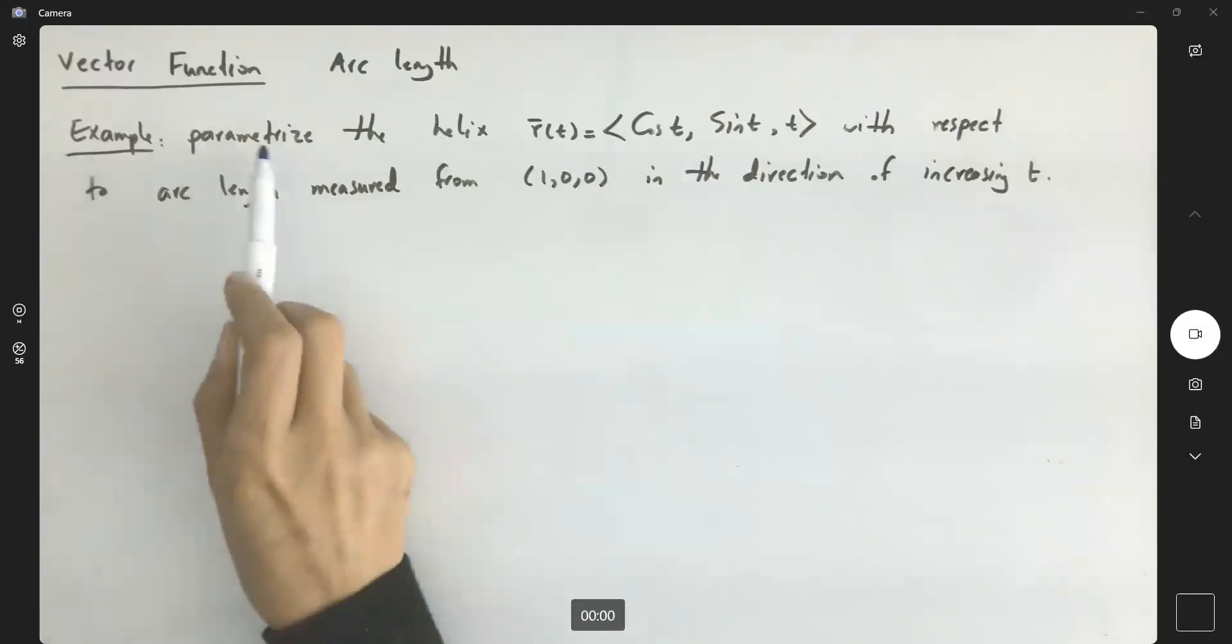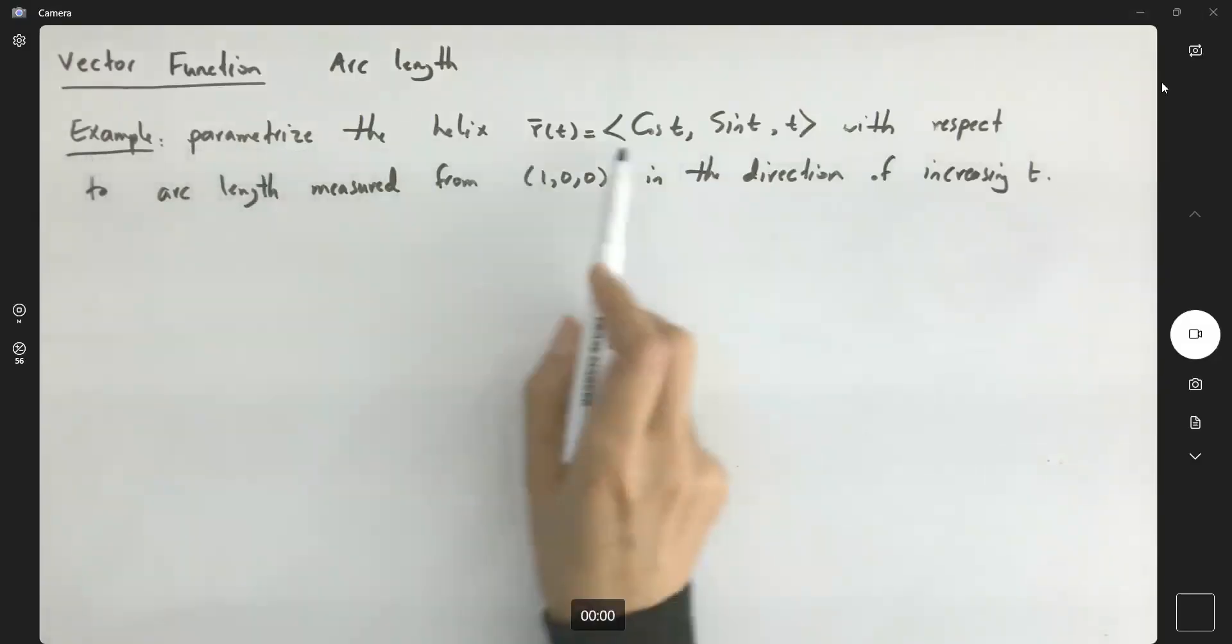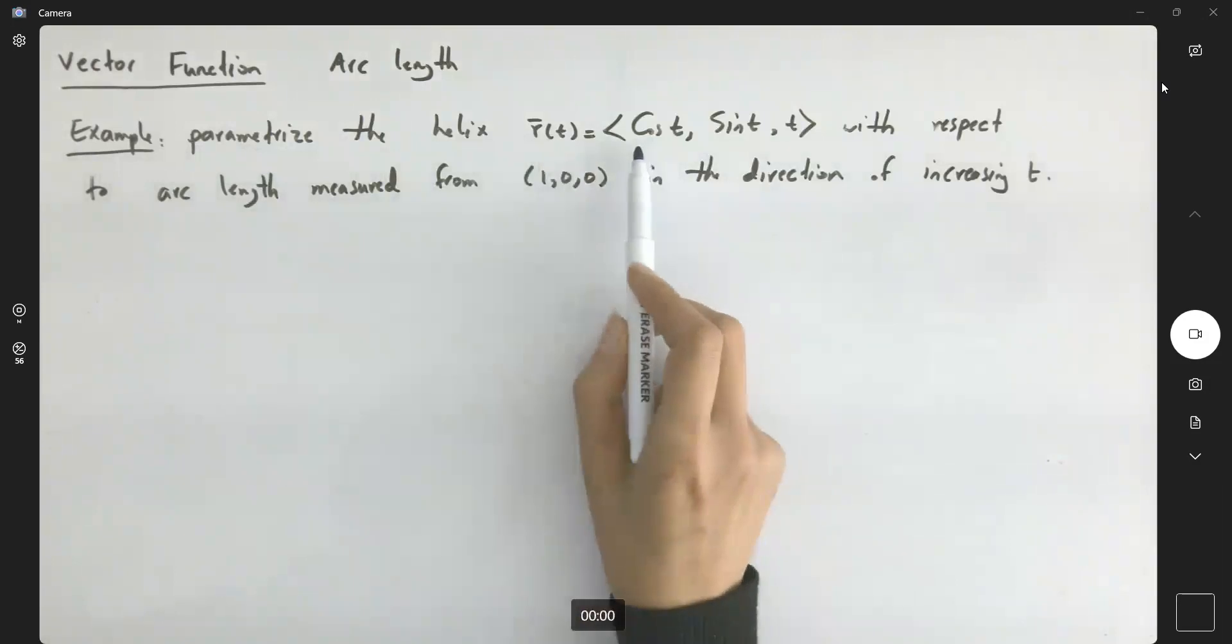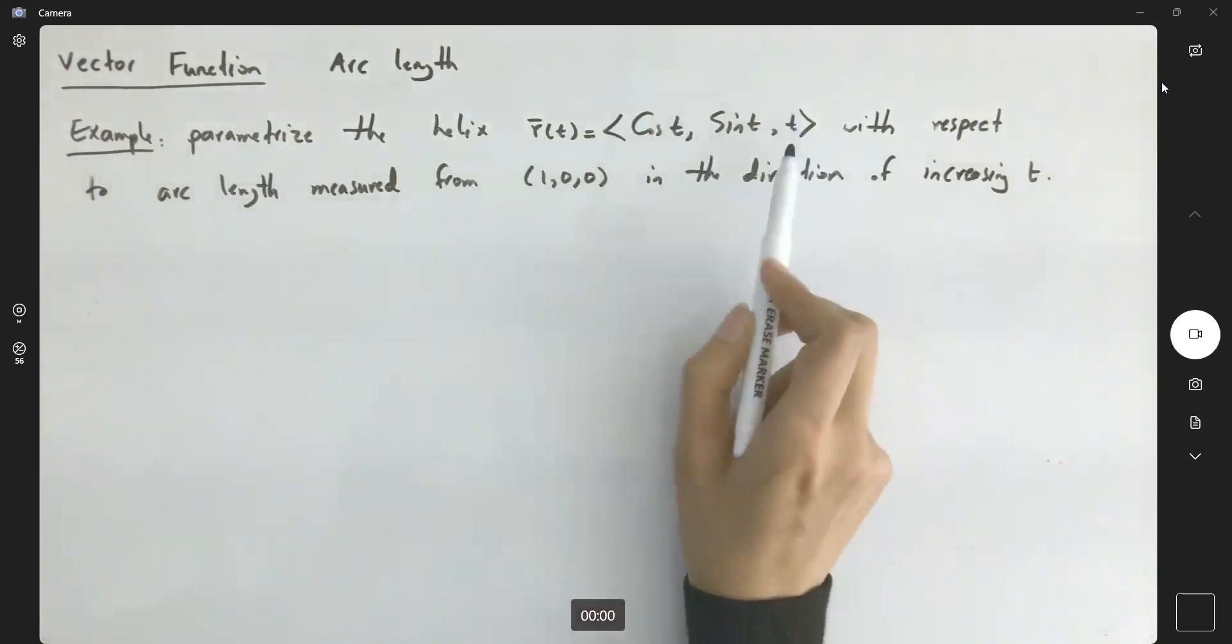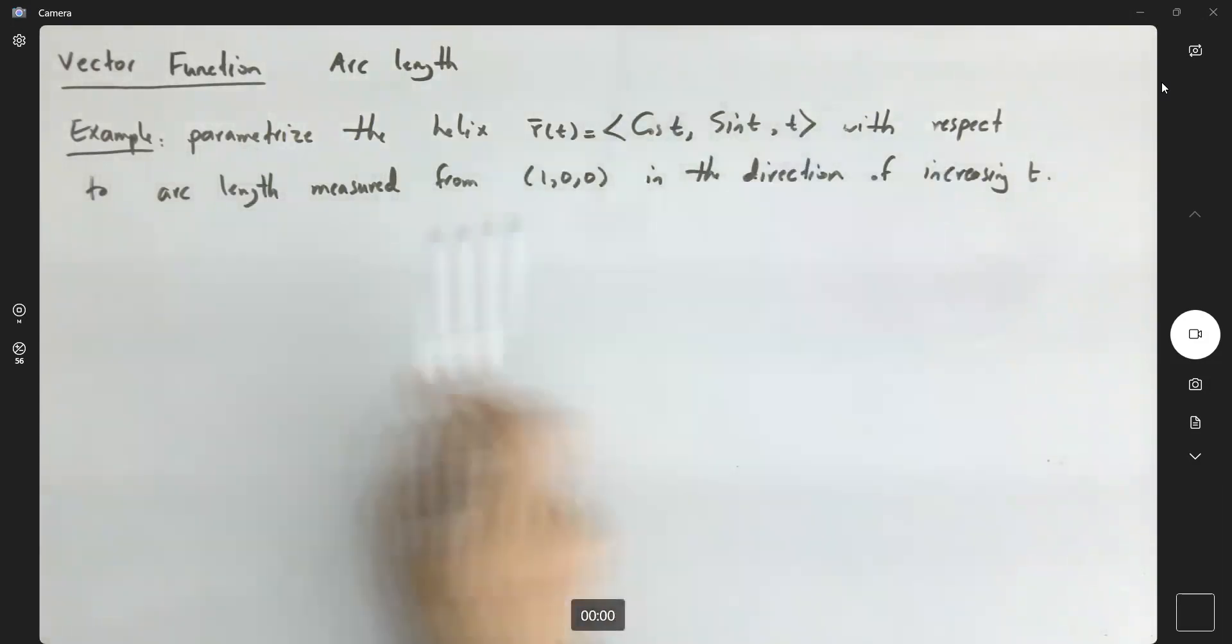Example: parametrize the helix given by r(t) equals cosine t, sine t, and t with respect to arc length measured from the initial point (1,0,0) in the direction of increasing t.